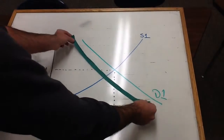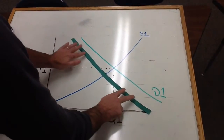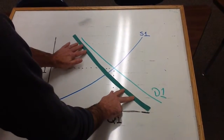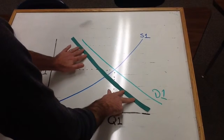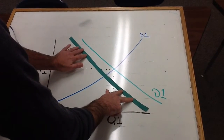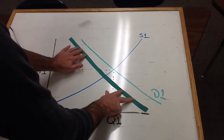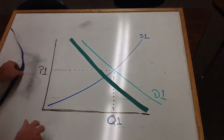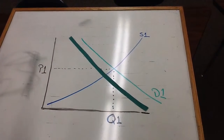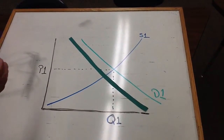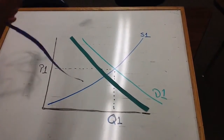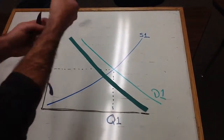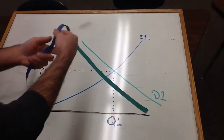I'll put down a new demand line that has decreased, so it's shifted to the left. And now I'm going to shift our supply S2 to the left as well.